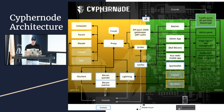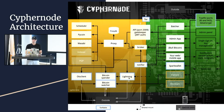Cyphernode supports Tor - you can turn it on or off, and choose which components you want to torify. For example, you could torify Lightning but not put it on the clearnet, and do the same with the Bitcoin client.